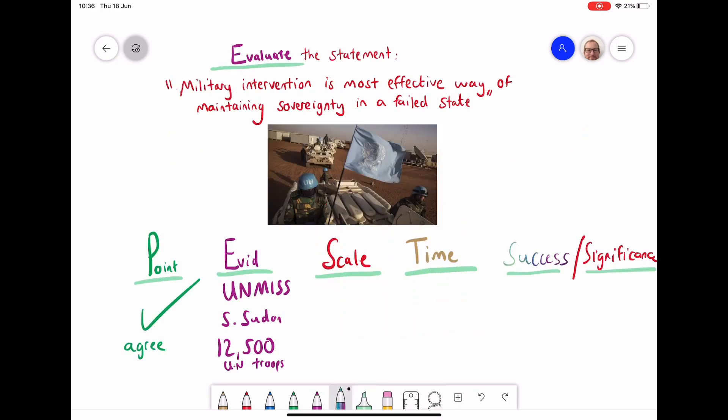So one way you could have approached this question is you could have just said, yes, my point is that I'm going to agree that military intervention is the most effective. You would then use some evidence. So you talk about the UNMIS mission in South Sudan, where they put lots of troops on the ground and they were able to hold elections because of that, because there was safety in the country. But then you need to think about, well, I'm evaluating this statement. How can I say maybe there are weaknesses in this argument in terms of scale and time and significance?